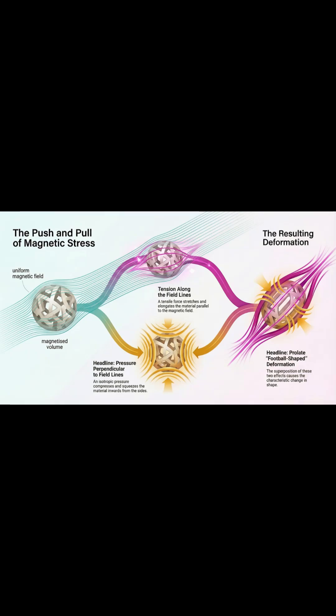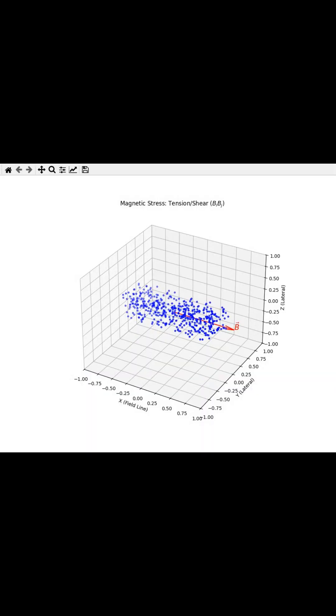Second, this magnetic stress is really a mix of two things: tension and pressure. The tension part comes from what we call the shear term, and physically, this is what causes the material to stretch out, pulling the object precisely along the direction of the magnetic field lines.